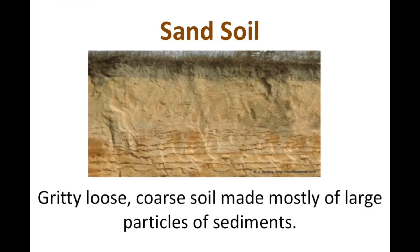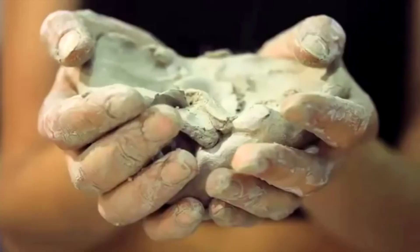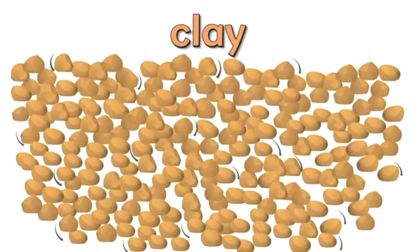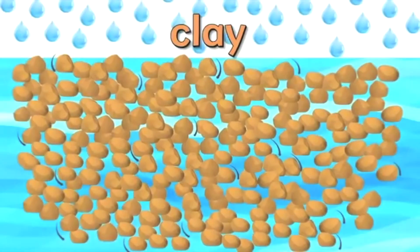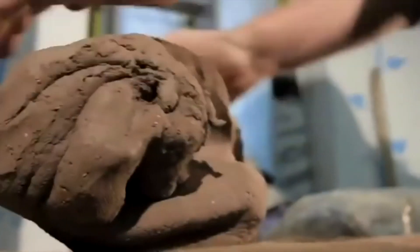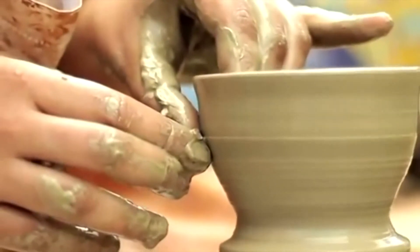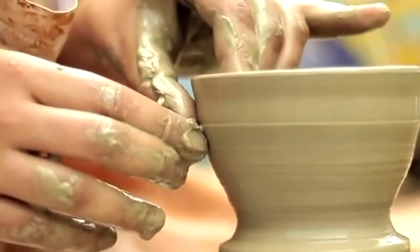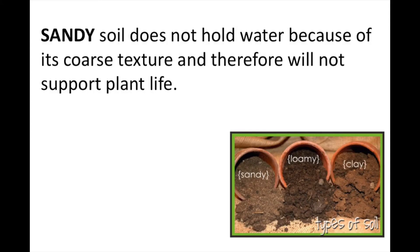Clay soil is the smallest among the other two types of soil. Particles are tightly packed together with very little or no air space. It is very sticky to touch when wet, but smooth when dried. It is very dense and heavy, which does not drain well or provide space for plant roots to grow.